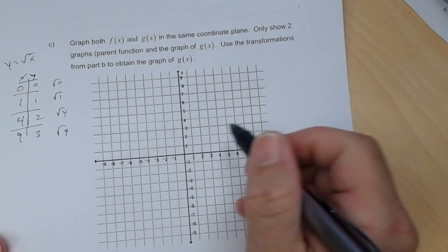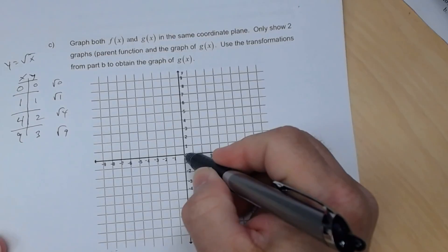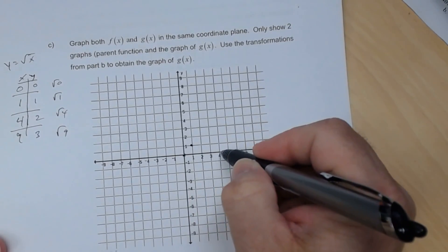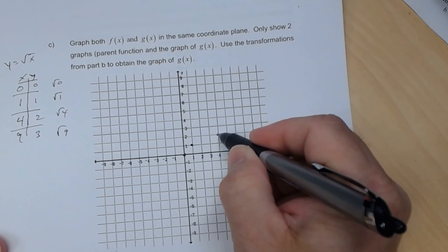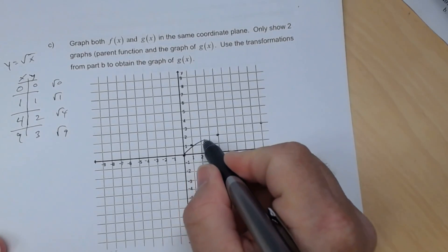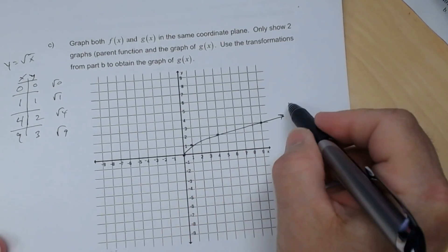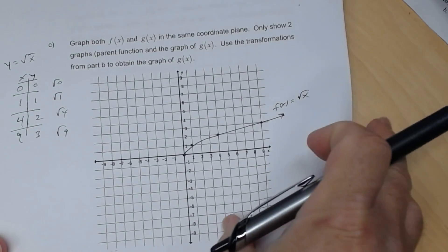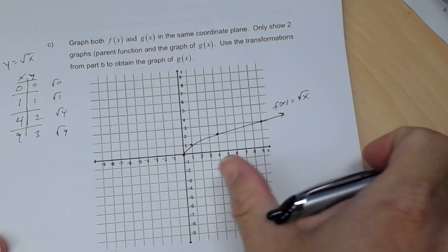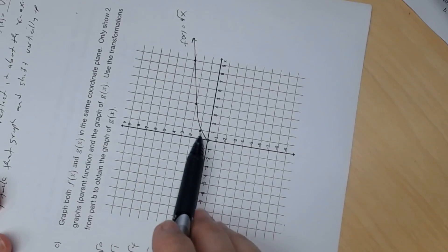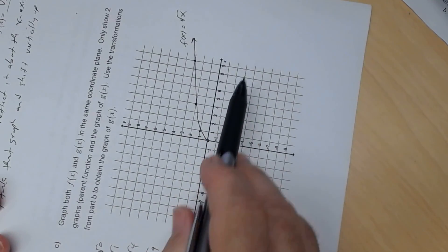The graph goes all the way to nine, so we can use the point (9, 3). We plot the origin, then (1,1), (4,2), and (9,3), then connect those points. This is the parent function, the square root of x. Notice the graph — it's really part of a parabola. The other part would do this, so it's part of a squared function.